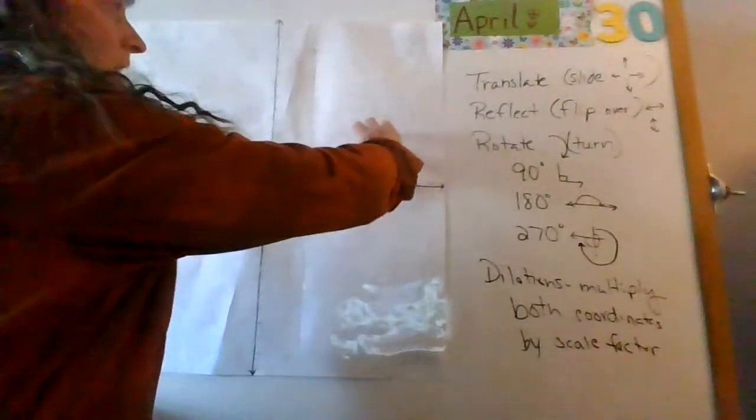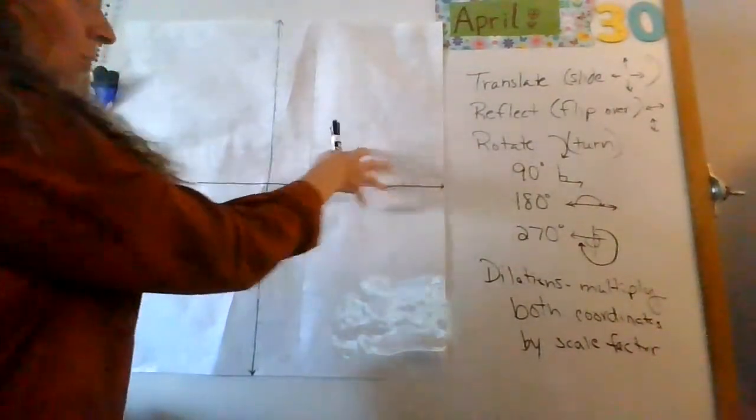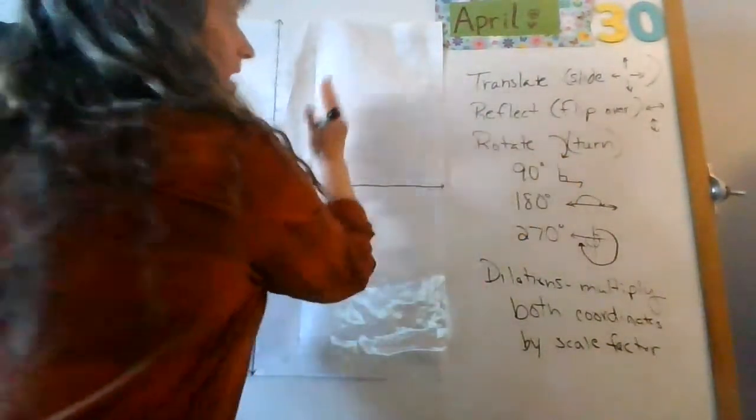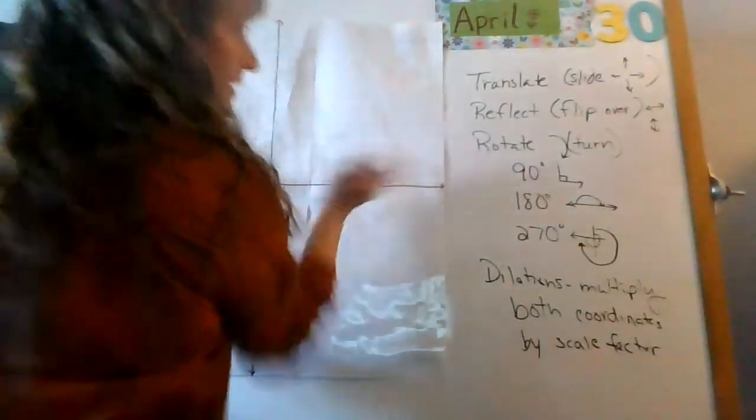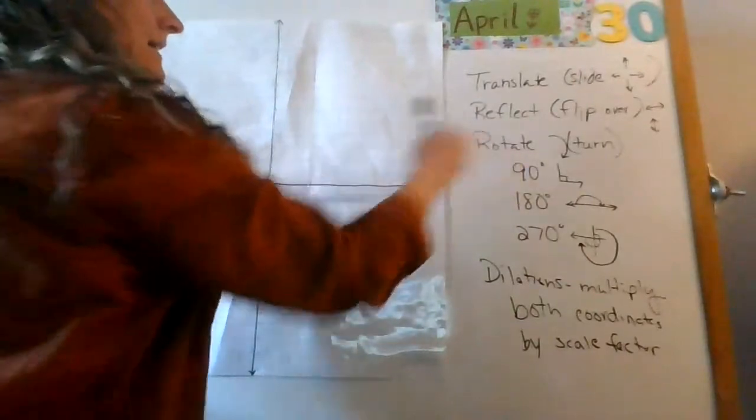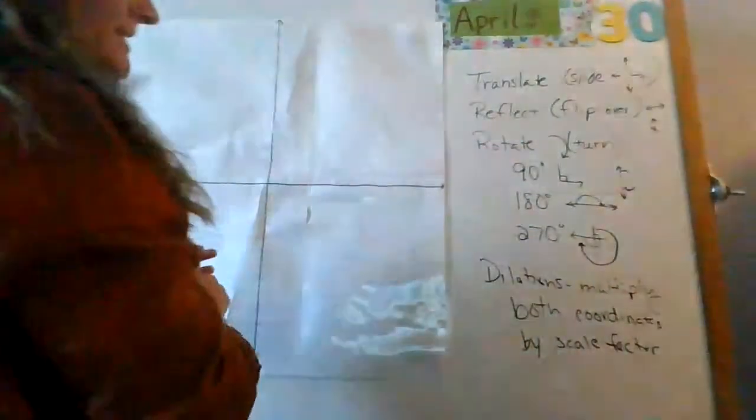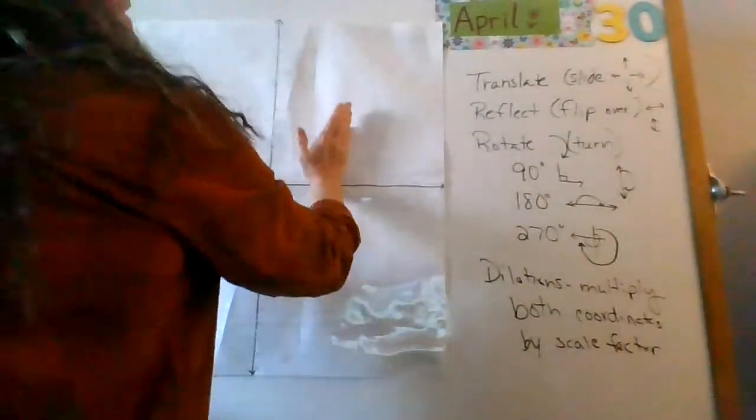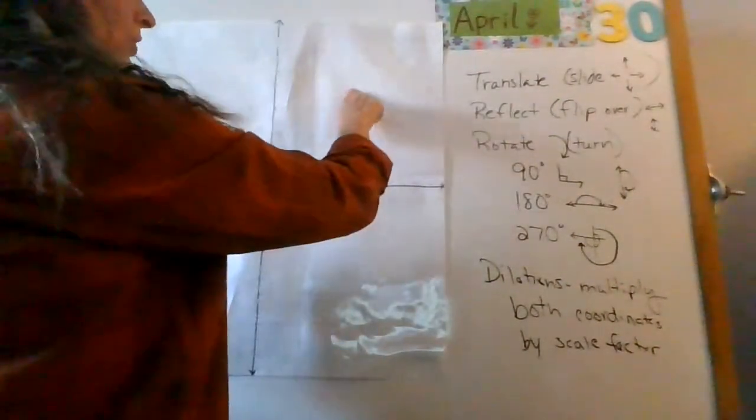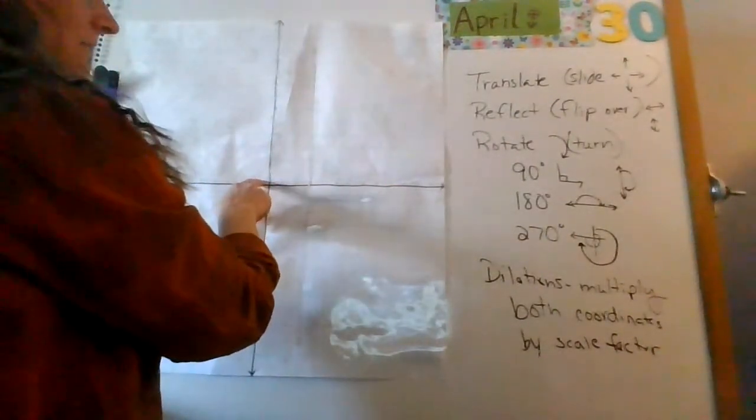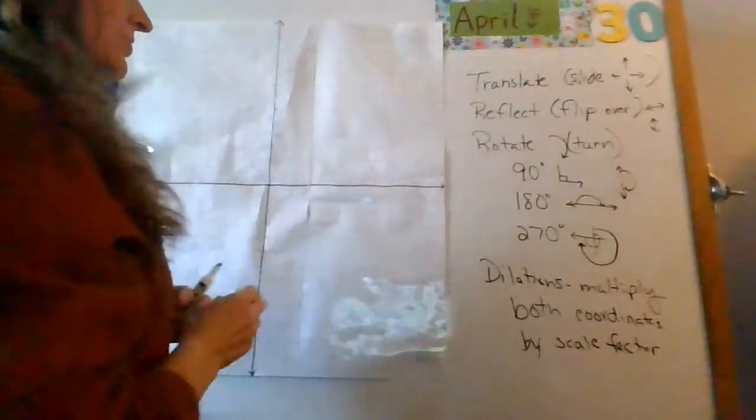Rotate means to turn. So, I take something, I take that whole shape, and it turns. 90 degrees means, like, it's up right here, and now I move it this way. 180, it goes, like, if I start up here, then it's going to go all the way down, right? So, I start here, and it goes all the way down. 270 is like 90 degrees backwards, or go 90, 180, and another 90, which is 270. So, that's like three quarters of a turn.